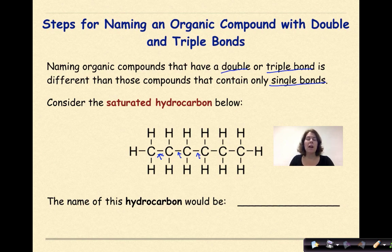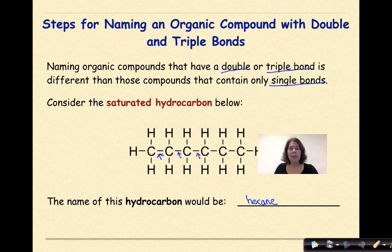So the name of this hydrocarbon would be, if we counted all of the carbons, there's one, two, three, four, five, six, so it would be hex, and then they're all single bonds, so this would be hexane. The name of this hydrocarbon is hexane.